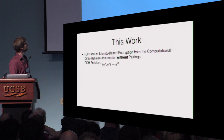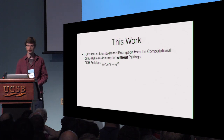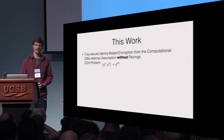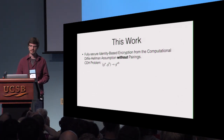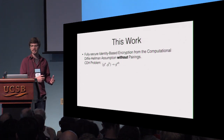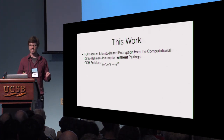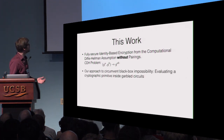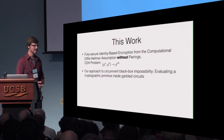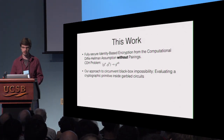What I'm going to show you in this work is the first fully secure identity-based encryption scheme from the computational Diffie-Hellman assumption without the use of bilinear pairings. Our construction is based on the computational Diffie-Hellman problem, which is to compute g^{AB} given g^A and g^B — not the decisional Diffie-Hellman problem, where the task is to distinguish this from uniform. The main ingredient to our approach is evaluating a cryptographic primitive inside garbled circuits, which allows us to overcome these aforementioned black-box impossibility results.